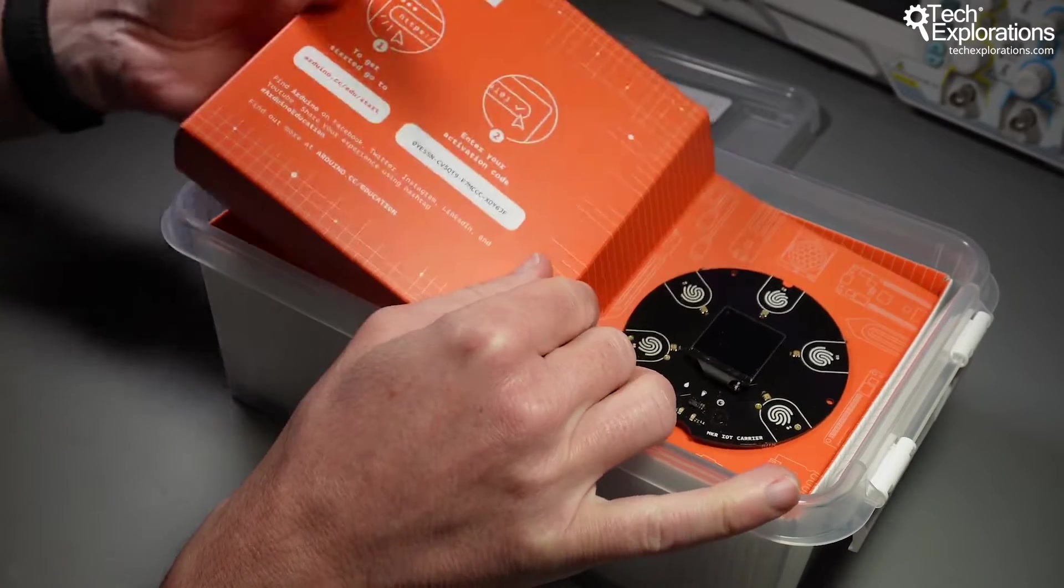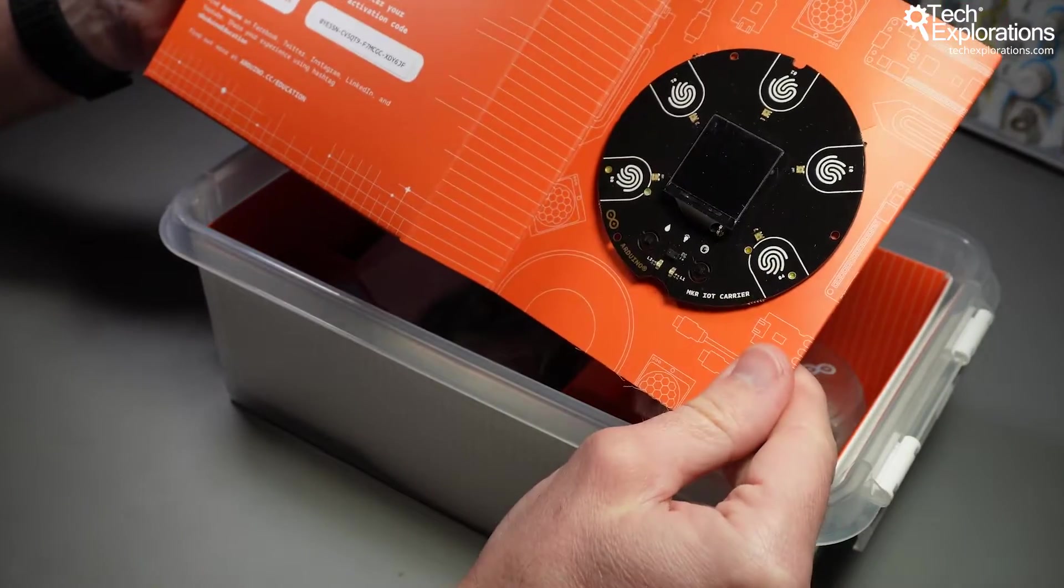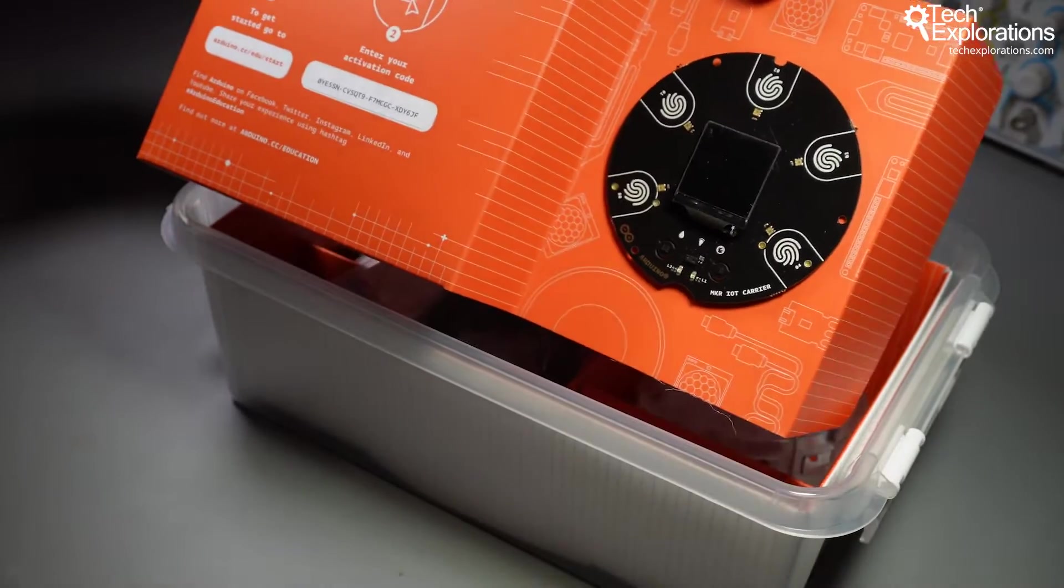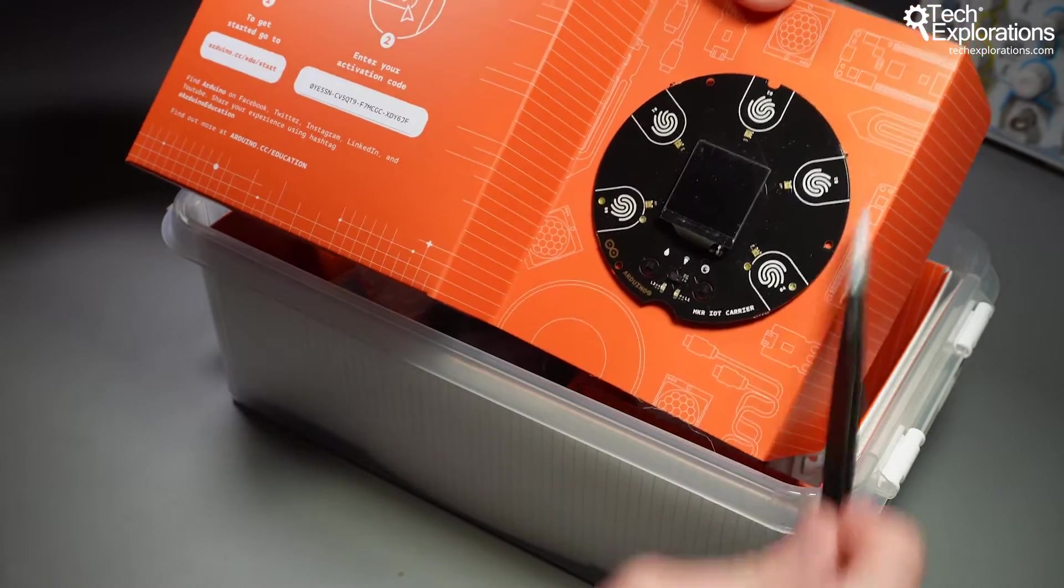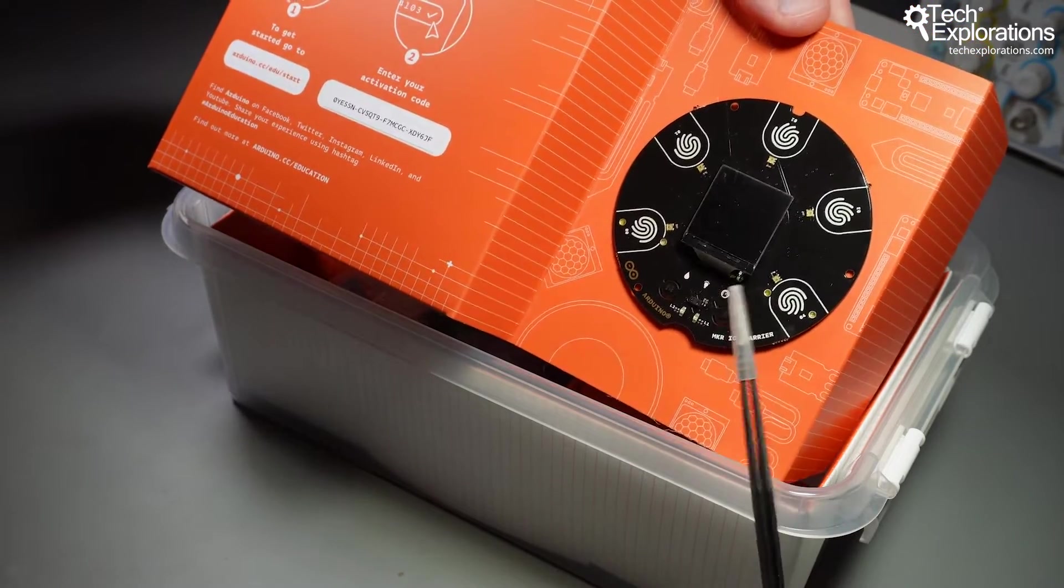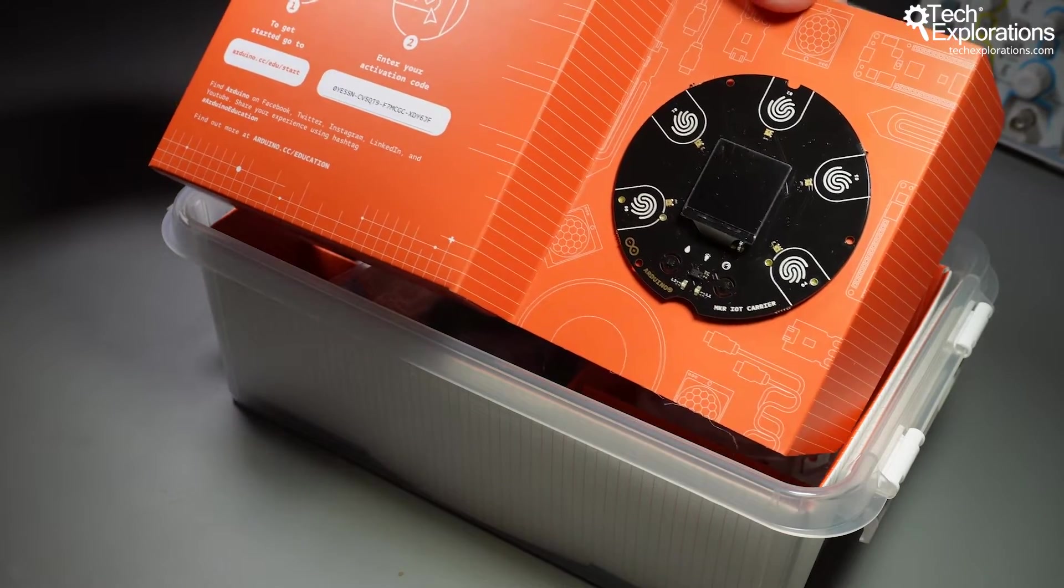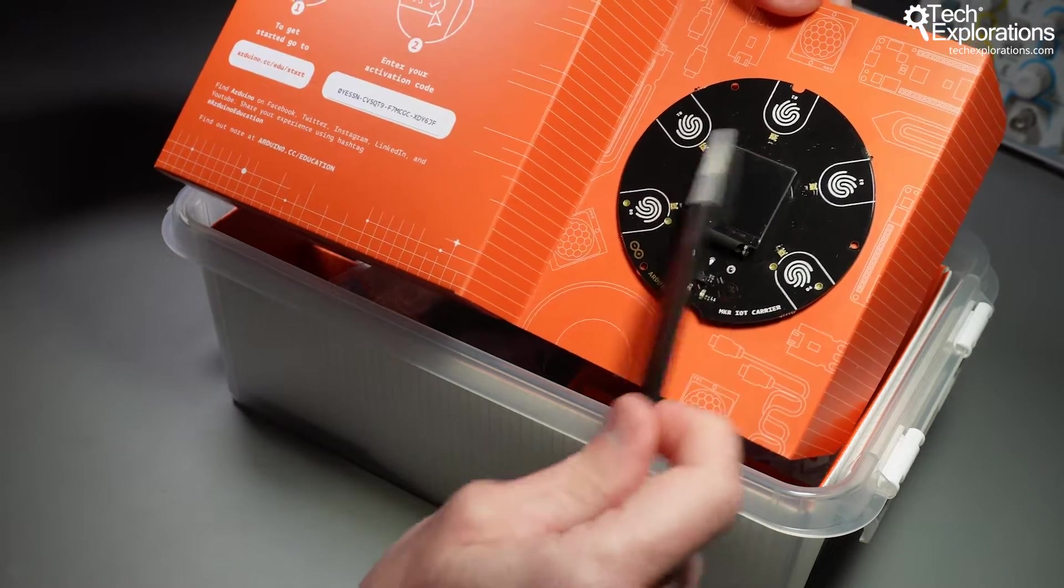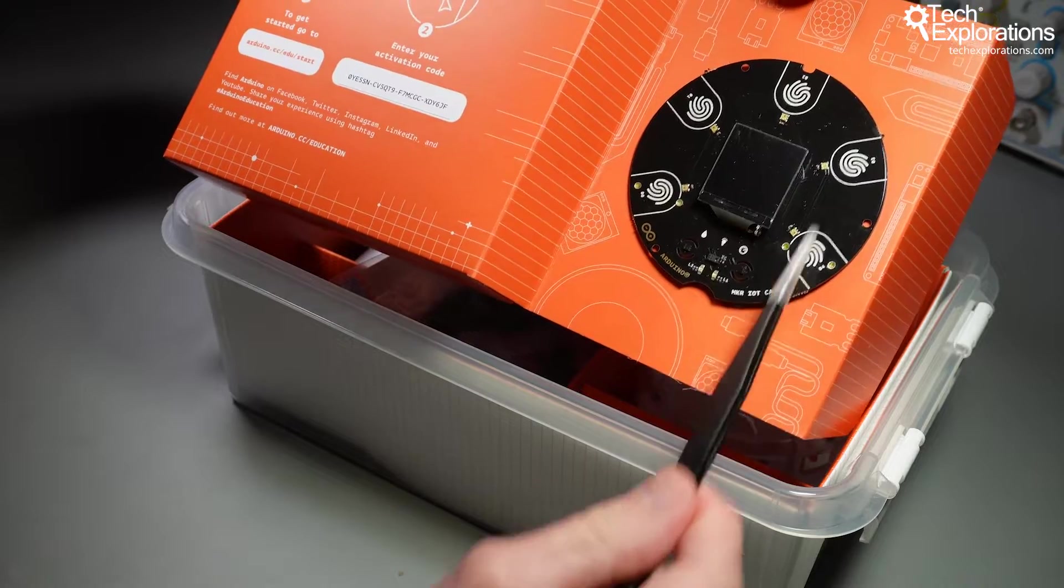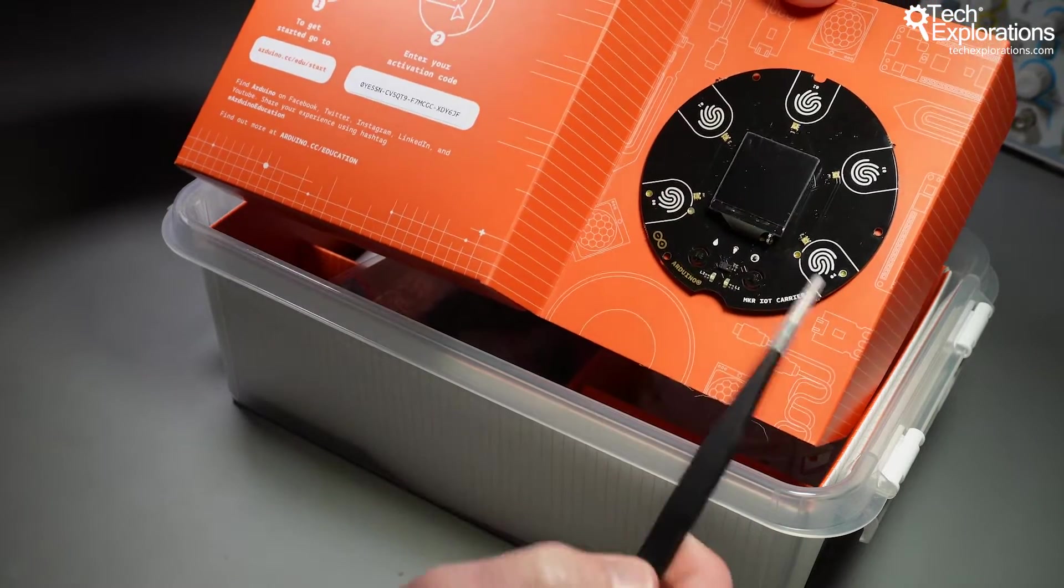The first thing to notice is that the kit contains the MKR IoT carrier board. It's an unusual shaped board - a circular board with an OLED screen in the middle and touch sensors along the side. There are one, two, three, four, five touch sensors.